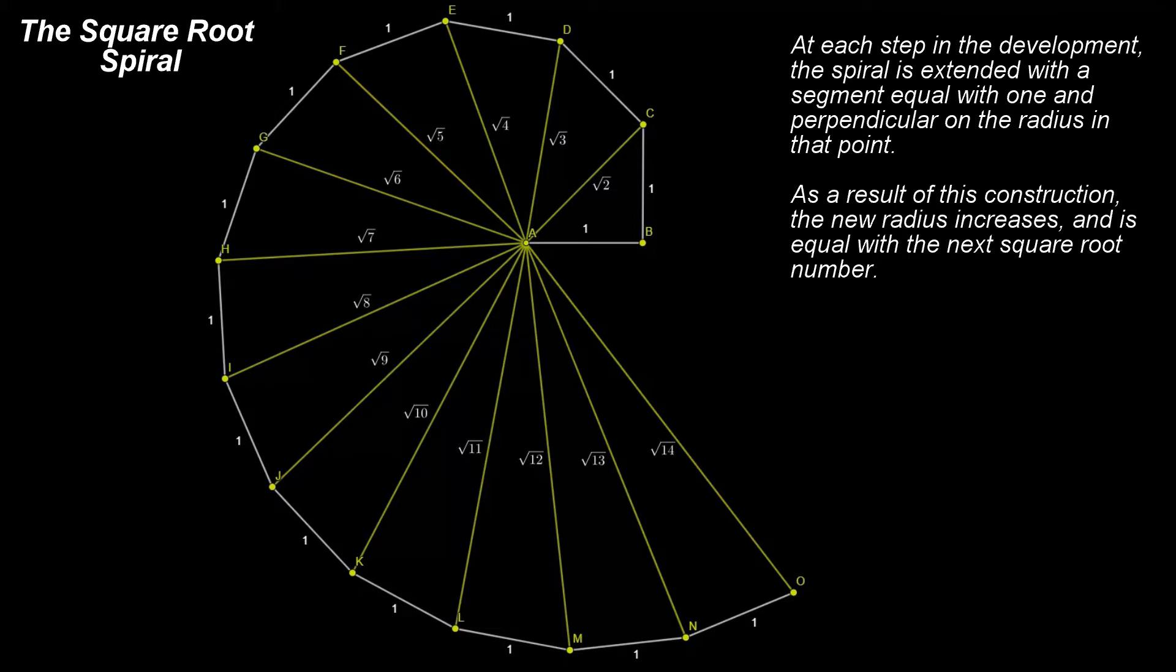So, the number of incommensurable magnitudes is infinite. The existence of incommensurable magnitudes is not some kind of very rare exception.